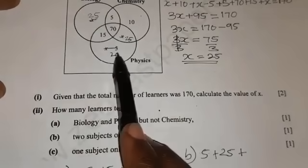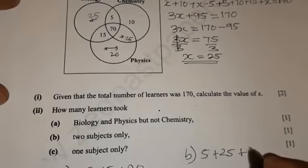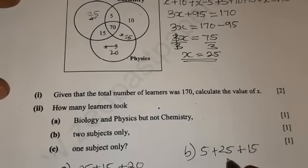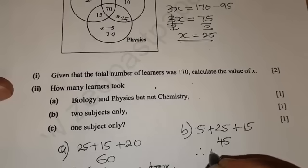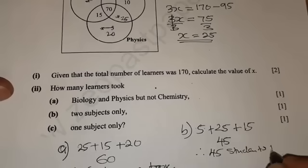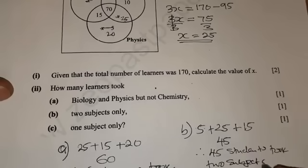Then plus, when you look at biology and physics, the intersection is 15. So you are going to add 15. So when you add this, you are going to have 45. So you conclude and say, therefore, 45 students took two subjects only.